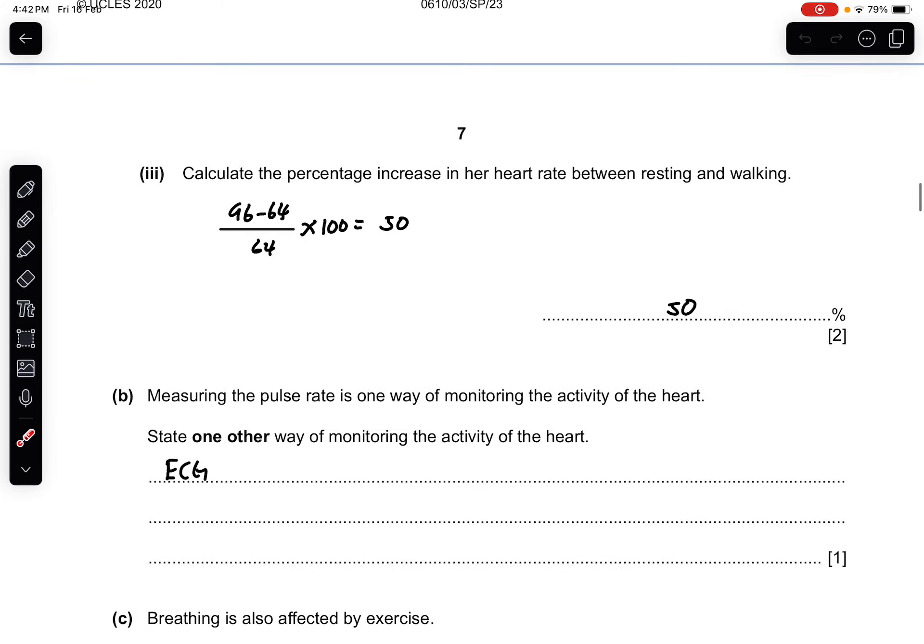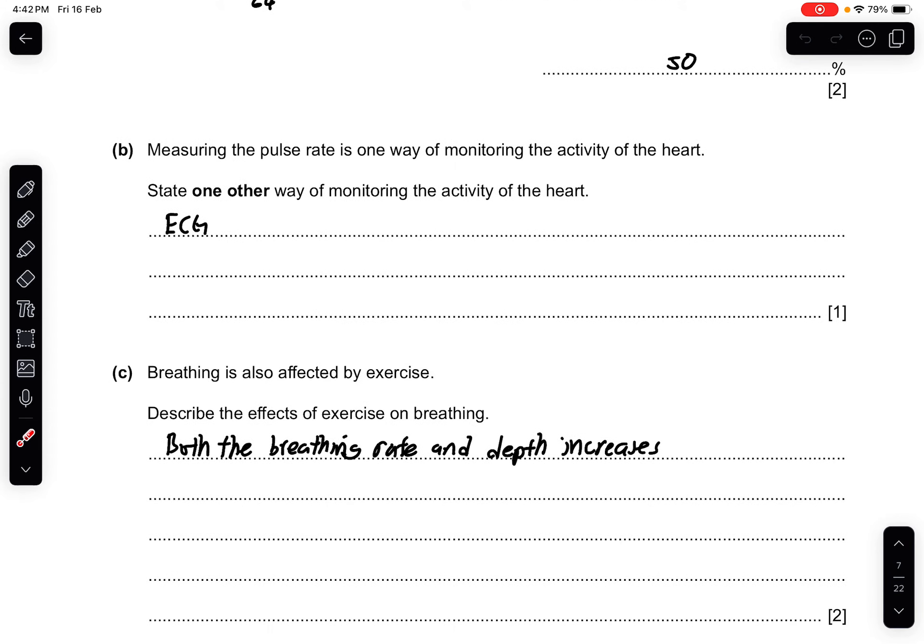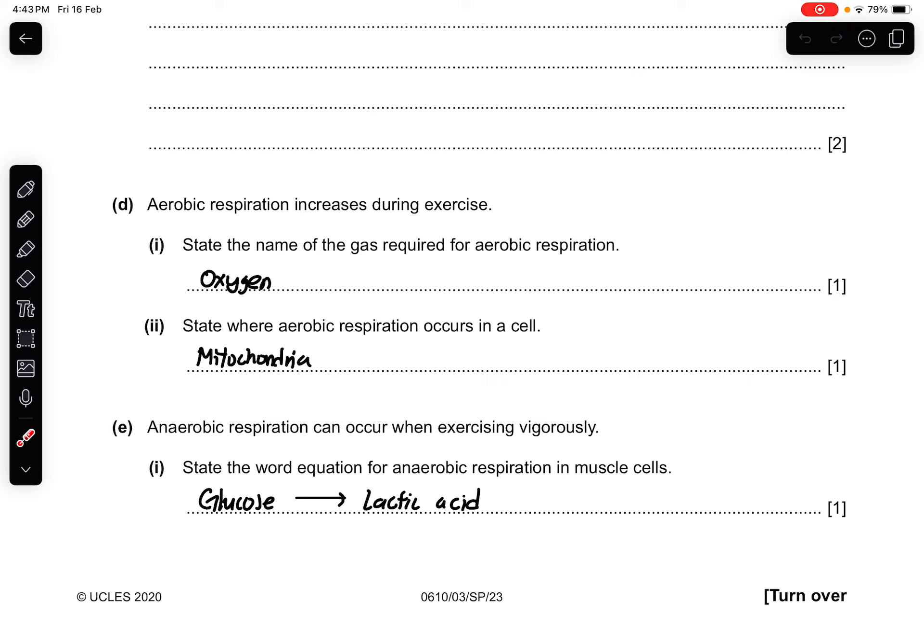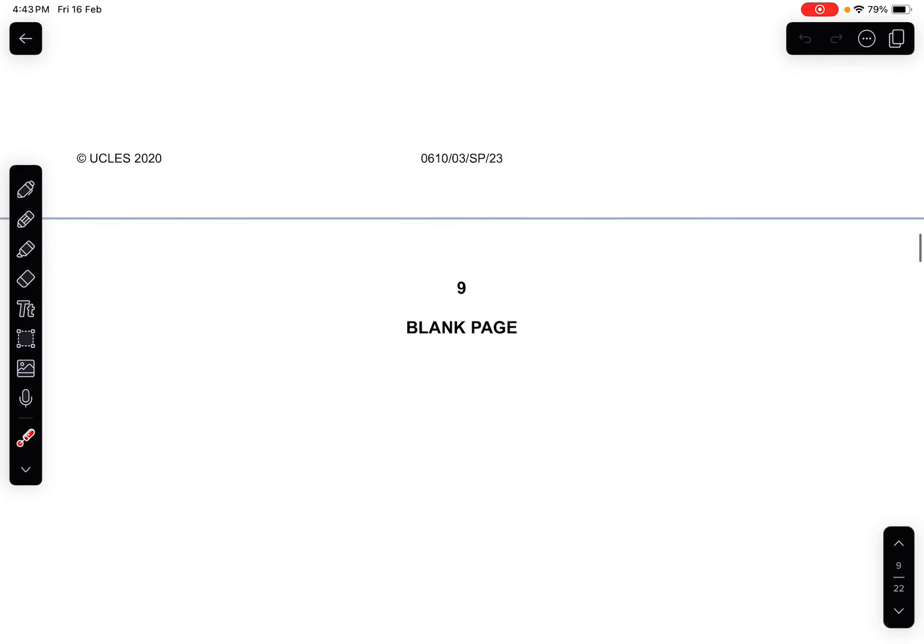Part B: Measuring the pulse rate is one way of monitoring the activity of the heart. State one other way: ECG. Part C: Breathing is also affected by exercise. Describe the effects of exercise on breathing: both the breathing rate and the breathing depth will increase. Part D: Aerobic respiration increases during exercise. State the name of the gas required for aerobic respiration: oxygen. Part 2: State where aerobic respiration occurs in a cell: the mitochondria. Part E: Anaerobic respiration can occur when exercising vigorously. State the word equation for anaerobic respiration in muscle cells: glucose to lactic acid. Part 2: State one advantage of using aerobic rather than anaerobic respiration: it releases more ATP or energy per glucose molecule.